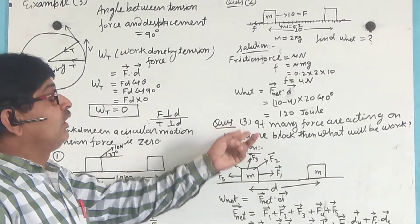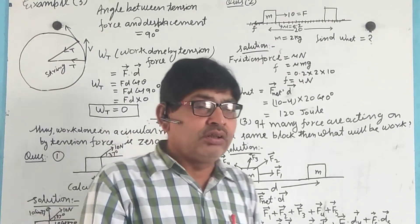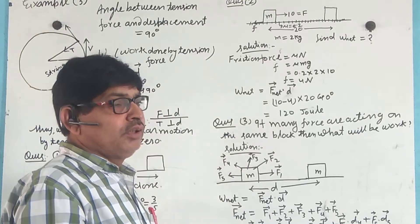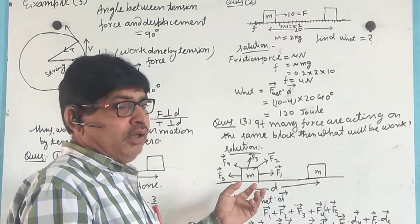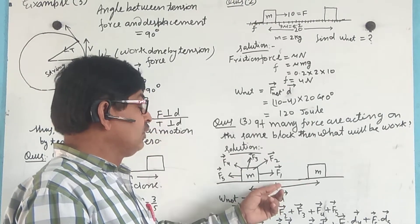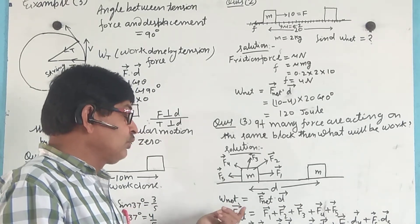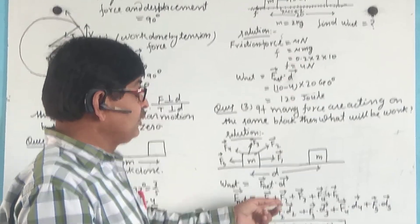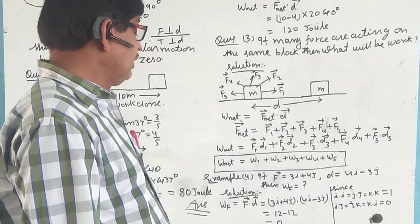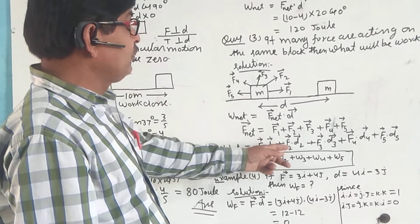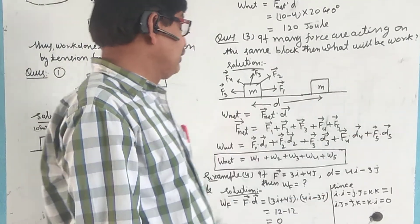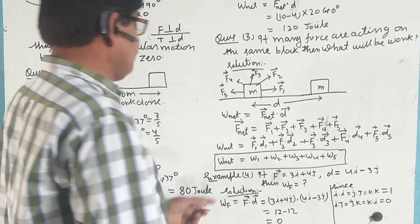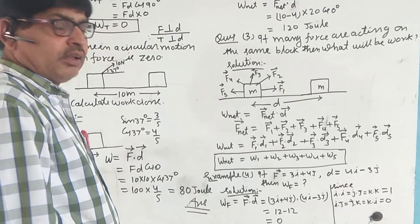Question number 3: if many forces are acting on the same block, what will be the total work done? Let us suppose that a mass M has different forces F1, F2, F3, F4, F5 acting on it, and the displacement along direction D. So net work W_net = F_net · D. First we calculate F_net as the vector sum F1 + F2 + F3 + F4 + F5. Then W_net = F1·D + F2·D + F3·D + F4·D + F5·D = W1 + W2 + W3 + W4 + W5. Adding these gives the net work done.